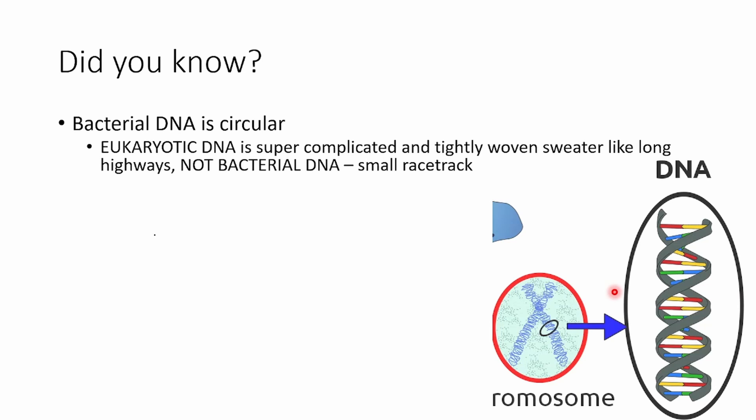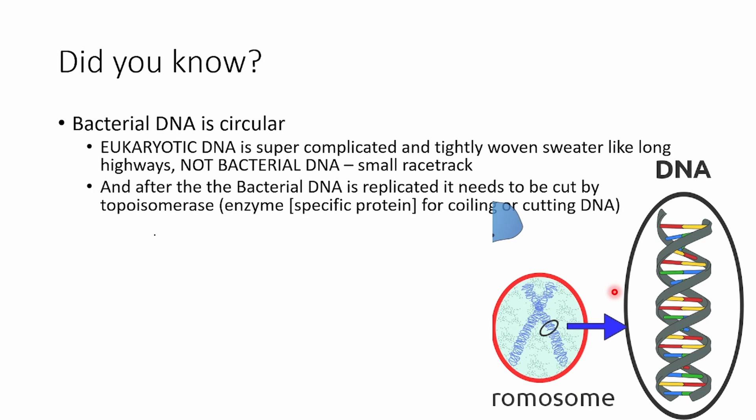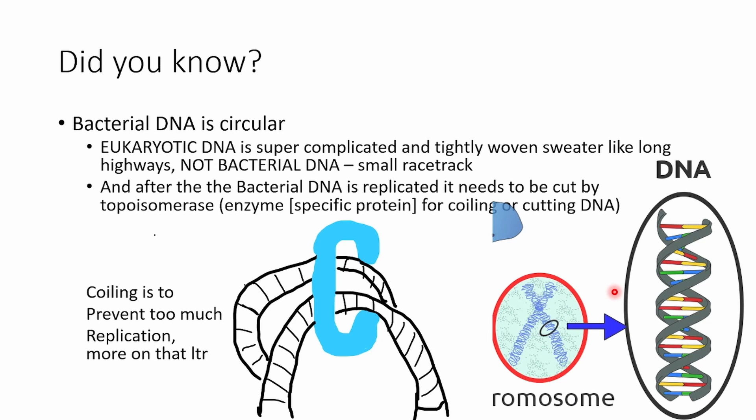Bacterial DNA I would describe as like an F1 track — very simple, very straightforward. Bacterial DNA is replicated and it needs to be cut by — I'm not even going to pronounce that — basically this enzyme is very helpful for coiling or cutting DNA. Very helpful, very easy to understand. Coiling is also about preventing too much replication. It'll just bind and unbind, and we'll get into that later.